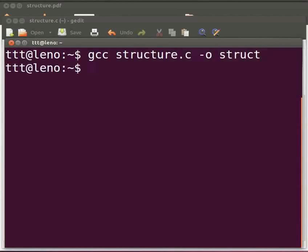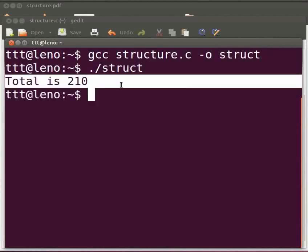To execute, type dot slash struct. Press enter. The output is displayed as total is 210.